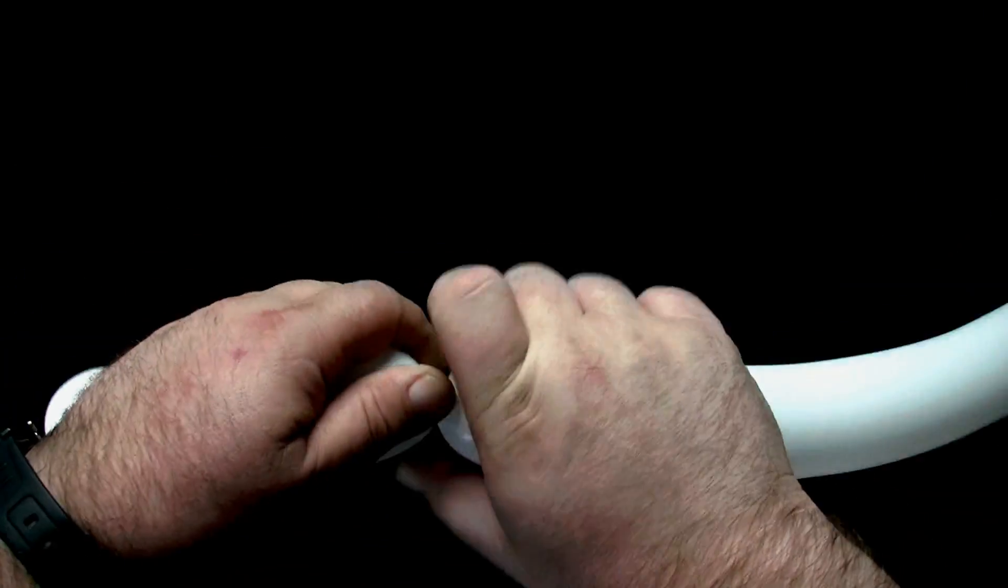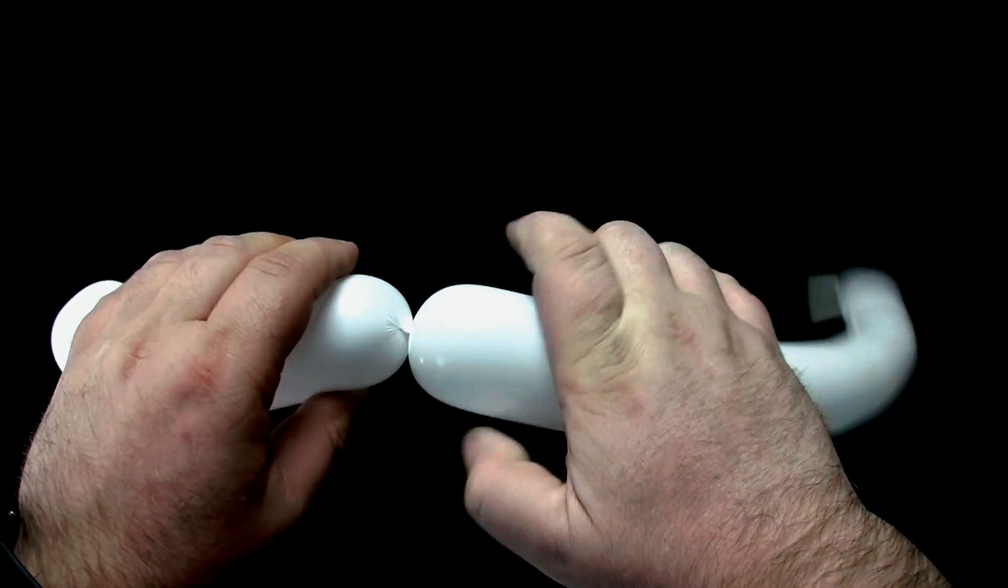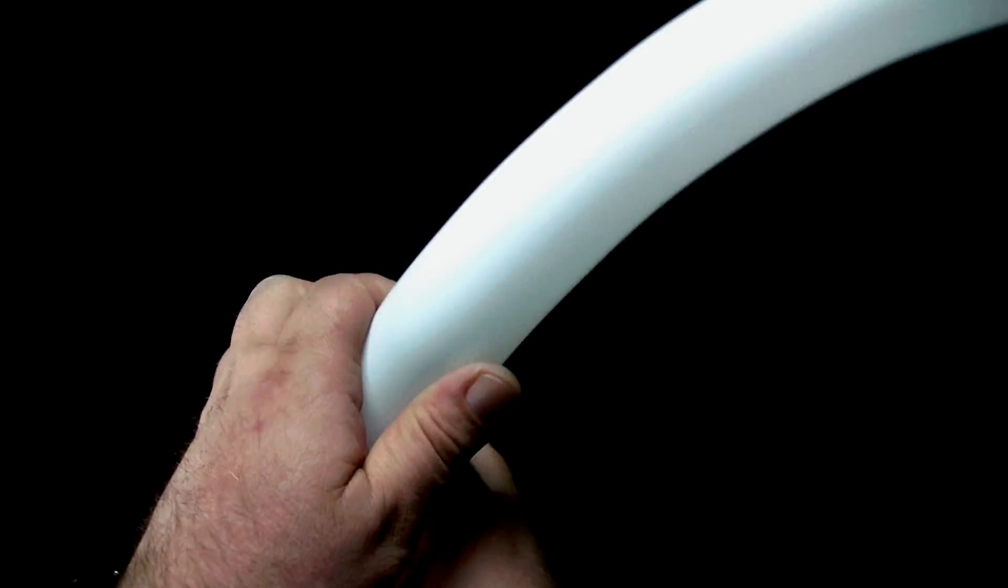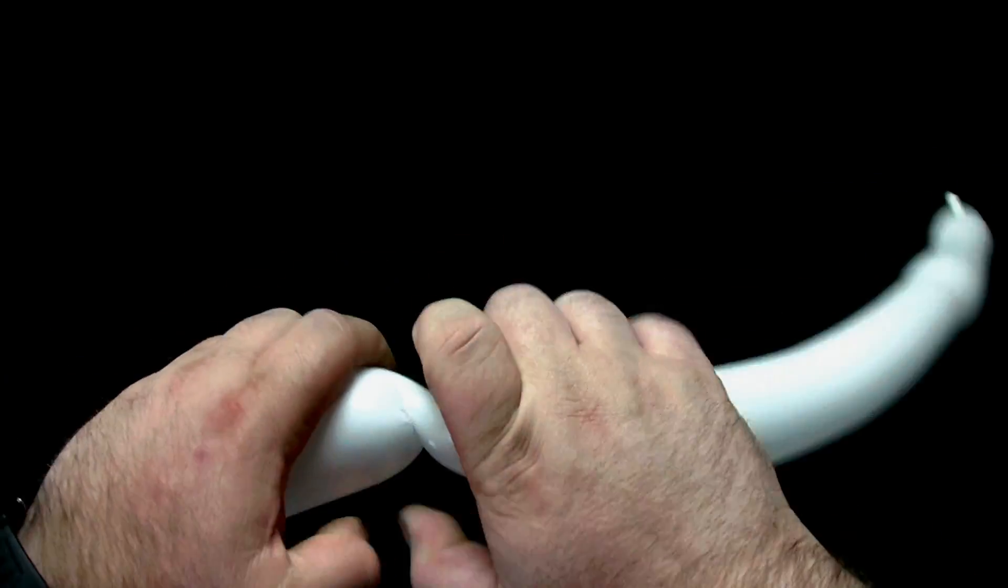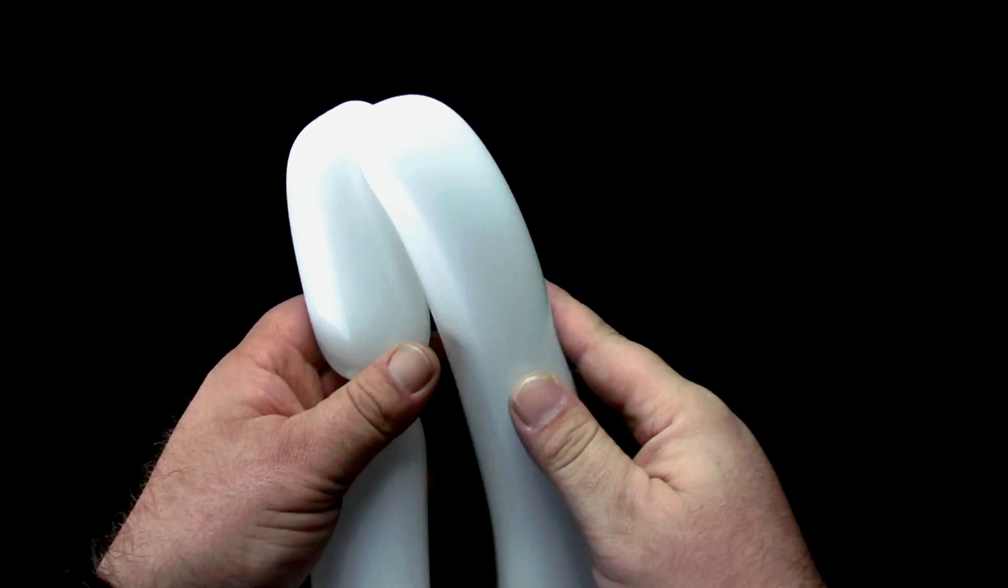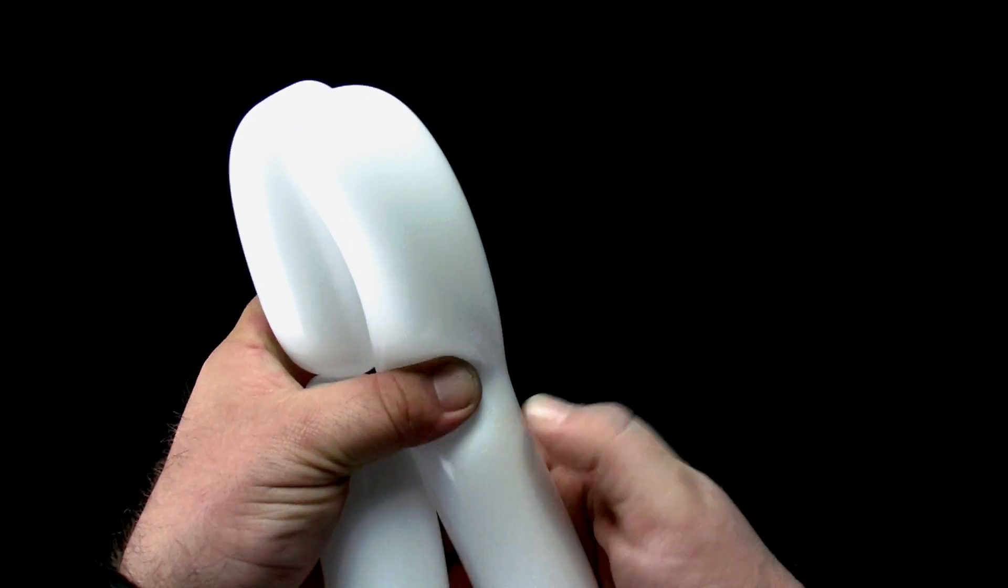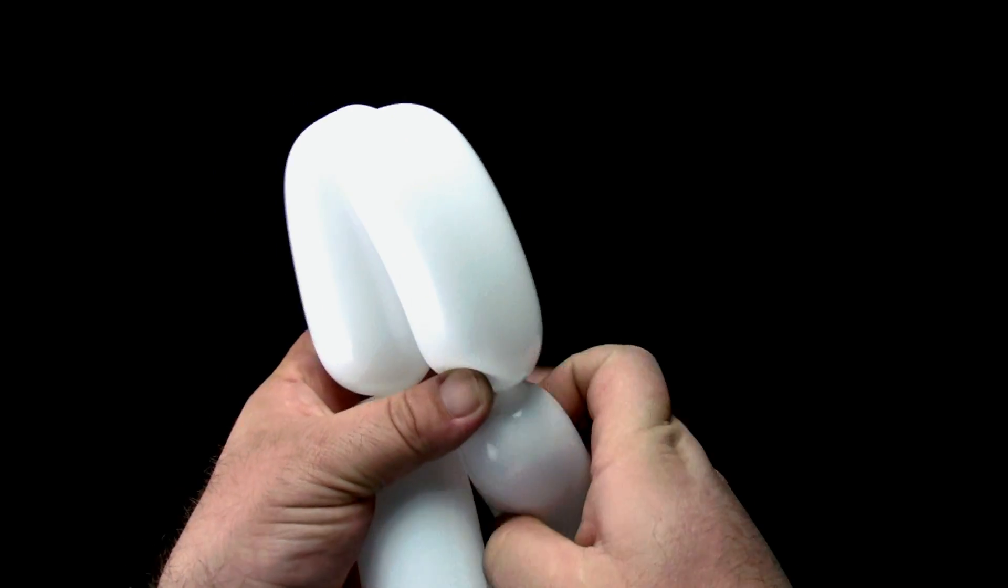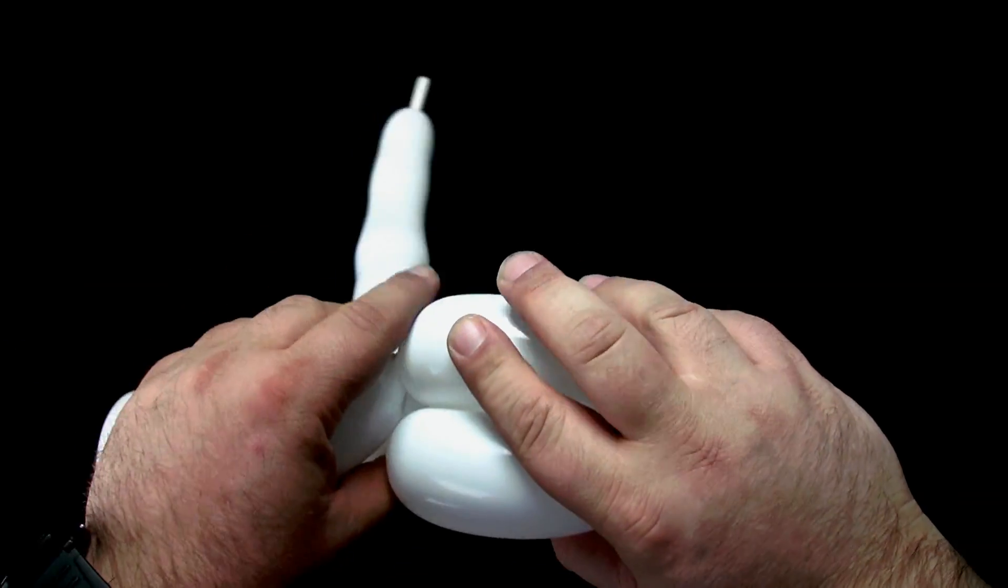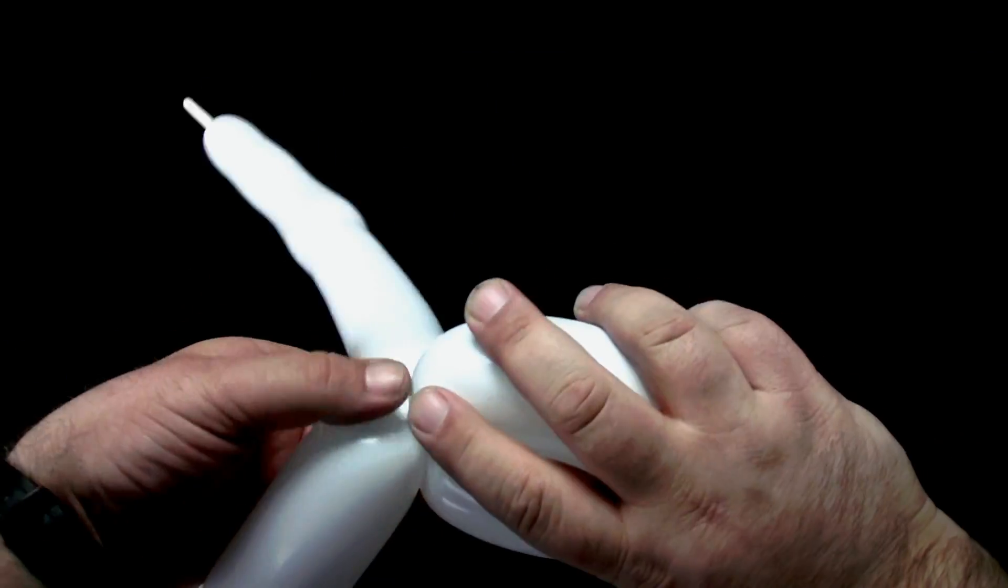Now twist a five finger bubble for the neck. Then twist two five finger bubbles and lock twist them together to form the front legs.